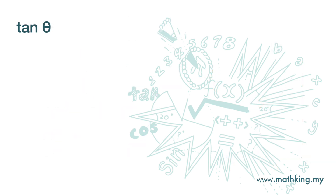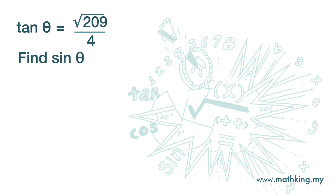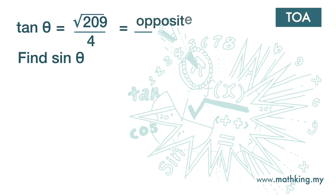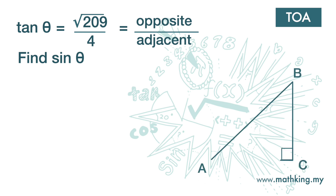If tangent theta is square root 209 over 4, find the value of sine theta. Now tangent — TOA — is opposite over adjacent. Given that tangent theta is square root 209 over 4, we can actually draw a triangle like this, where the opposite of theta is square root 209 and the adjacent of theta is 4.